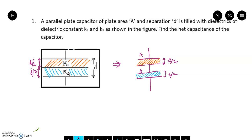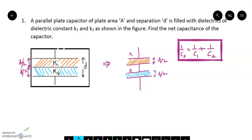When I connect these two capacitors in series, the net capacitance is given by: 1 upon Cs equals 1 upon C1 plus 1 upon C2, where Cs is the equivalent capacitance, C1 is the capacitance of the first capacitor, and C2 is the capacitance of the second capacitor. Now I can find the values of C1 and C2 to determine Cs.